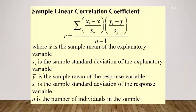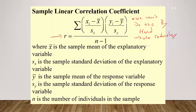To calculate the sample linear correlation coefficient R, it's the sum of each X value minus the mean divided by the standard deviation, times each Y value minus the mean of Y divided by the standard deviation of Y, all divided by n minus 1. This formula is very complex, so for these problems we won't do this by hand — we'll always use technology to find R.